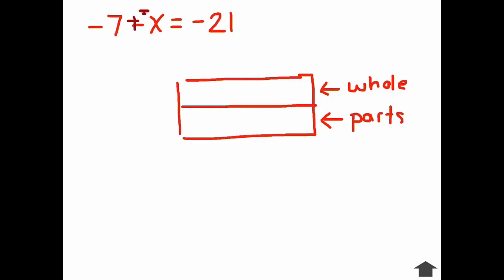So now my equation says negative 7 plus negative x equals negative 21. You'll notice now that all of our pieces are negative. Even though we're negative, we can still use the bar model in the same way. My whole is the negative 21. And I know that negative 7 makes up part of my parts. And x makes up the other part of the parts.